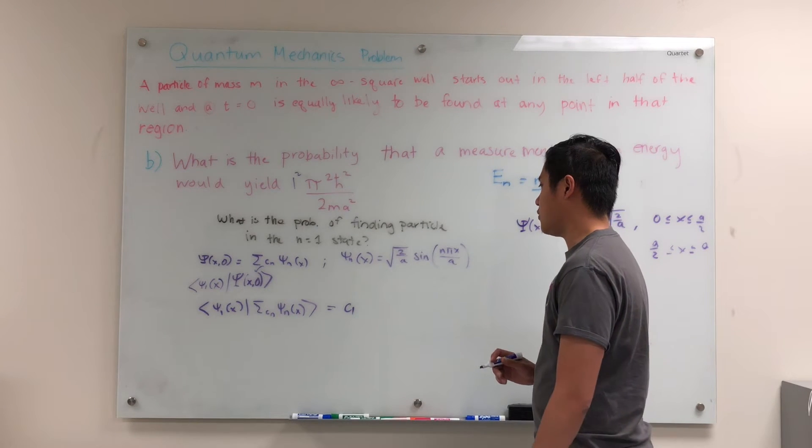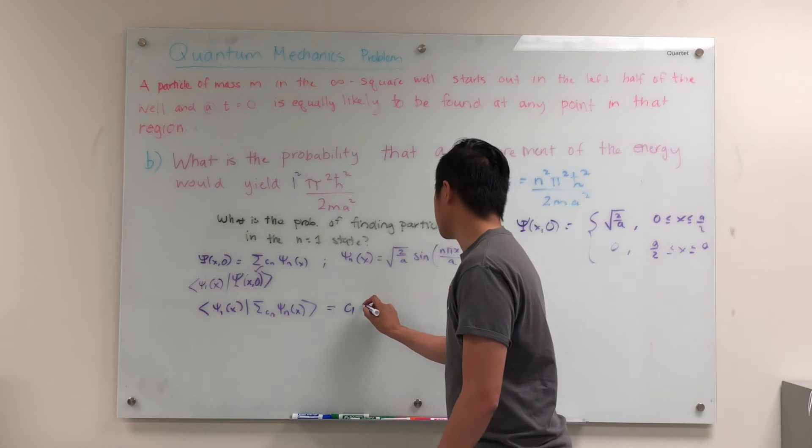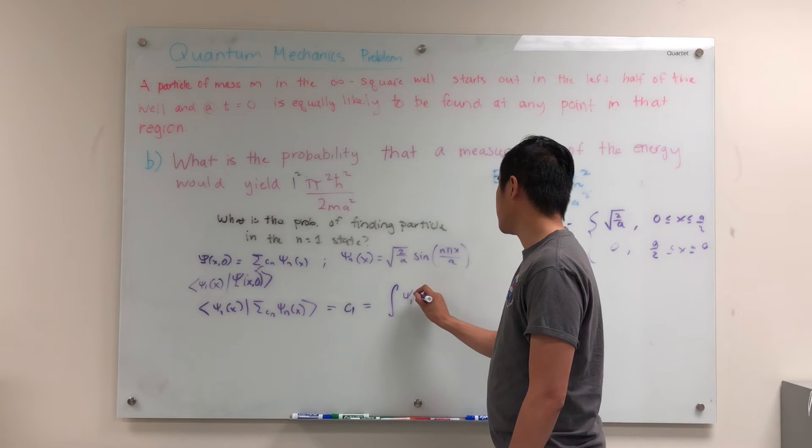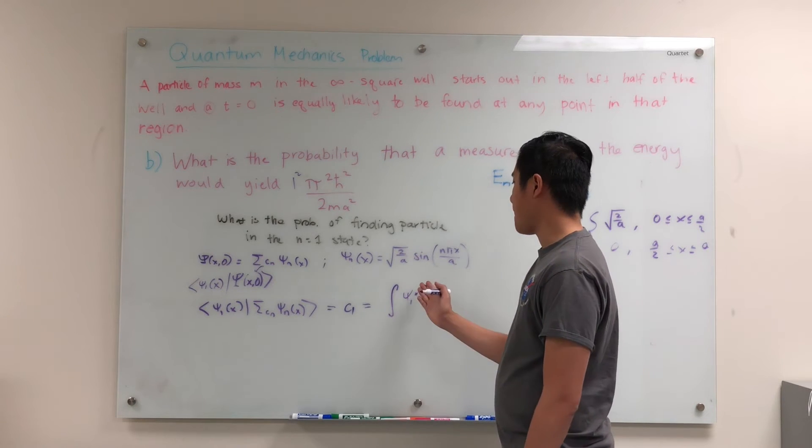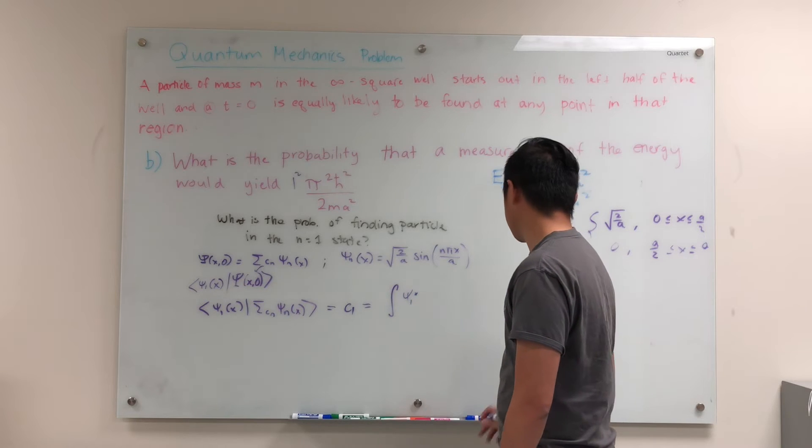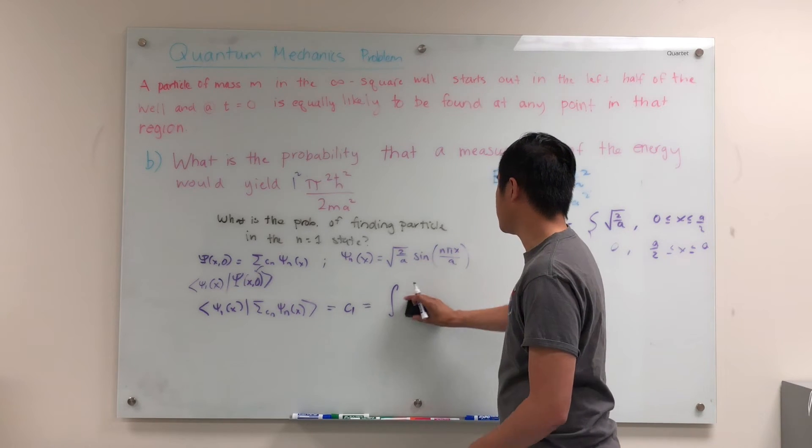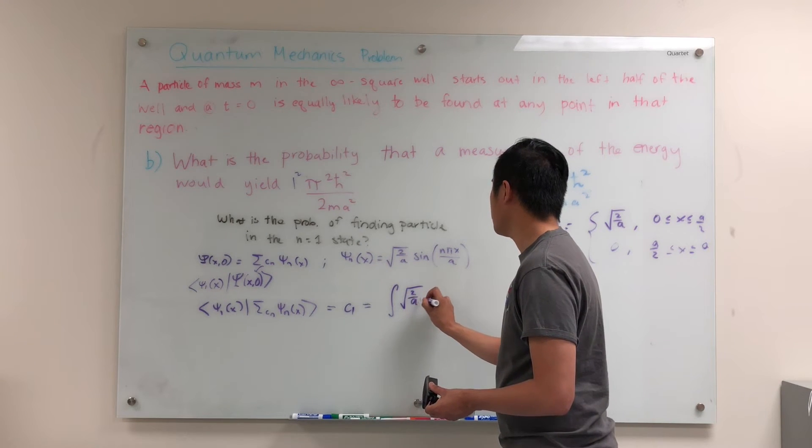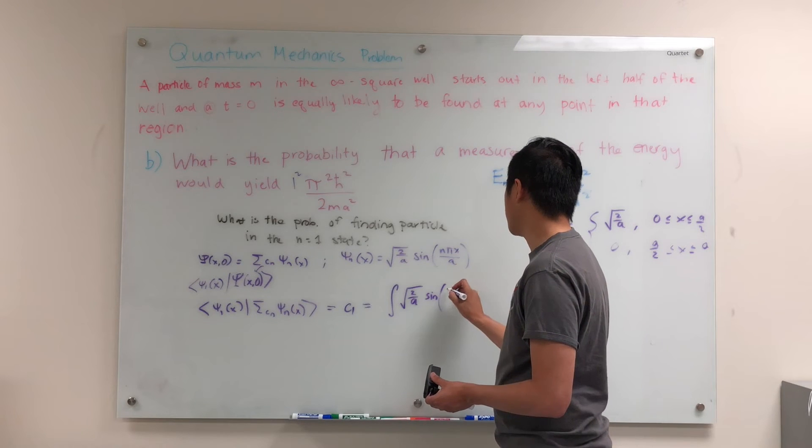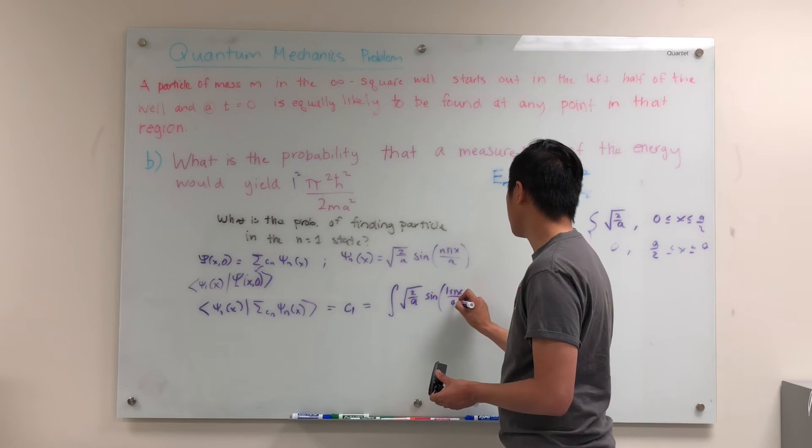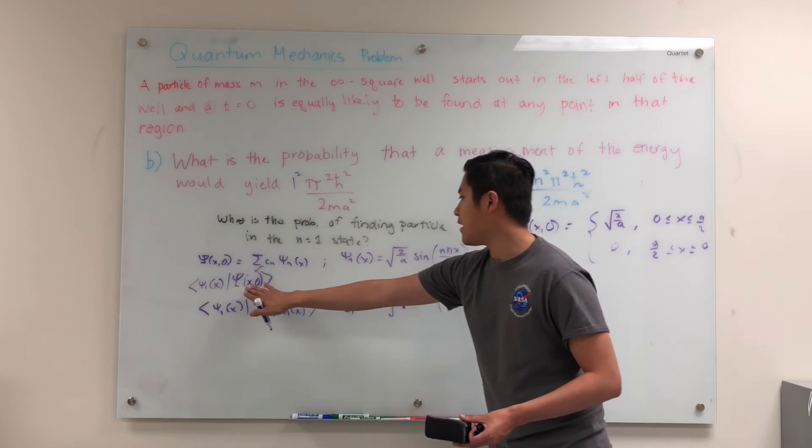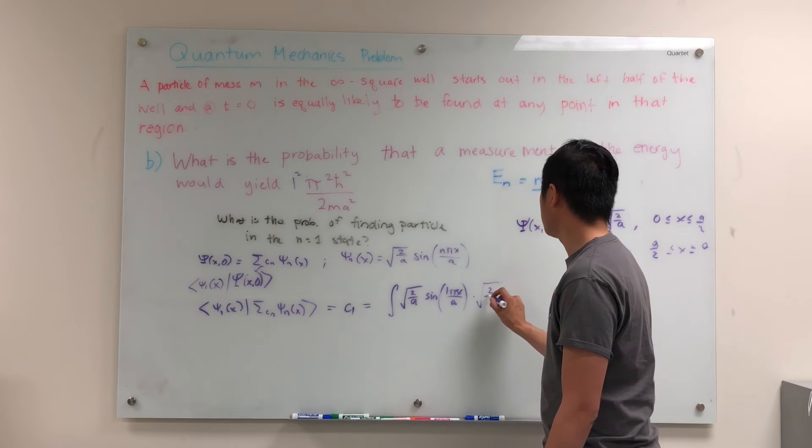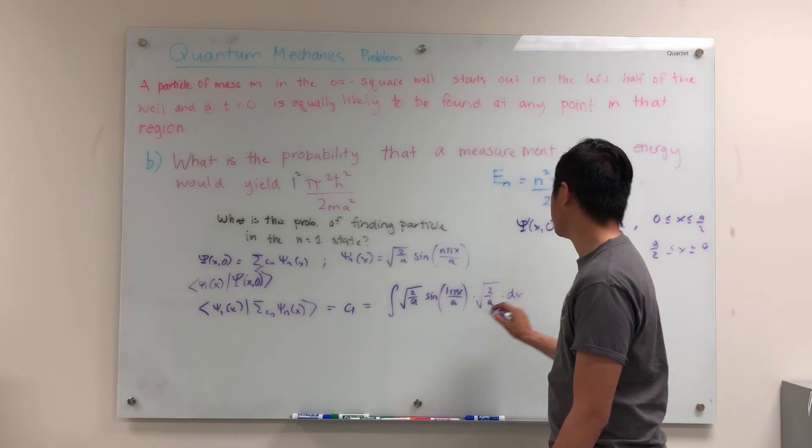So to do that in integral form, what we're going to do is that this is also equal to integral psi 1. So technically we'll have psi 1 complex conjugate, but this is a real function. There's no complex numbers there. So what we're going to do is that we're just going to have psi 1. So psi 1 would just be root 2 over a sine, so n equals 1, 1 pi x over a. Now we'll have psi x of 0, which is just root 2 over a. And that we have dx there.